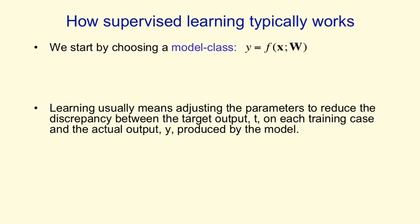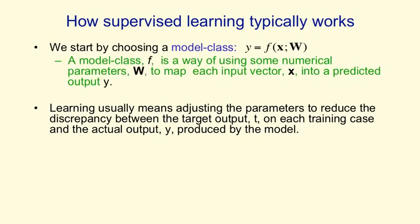Supervised learning works by initially selecting a model class — that is, a whole set of models that we're prepared to consider as candidates. You can think of a model class as a function that takes an input vector and some parameters and gives you an output y. A model class is simply a way of mapping an input to an output using some numerical parameters w, and then we adjust these numerical parameters to make the mapping fit the supervised training data. What we mean by fit is minimising a discrepancy between the target output on each training case and the actual output produced by our machine learning system.